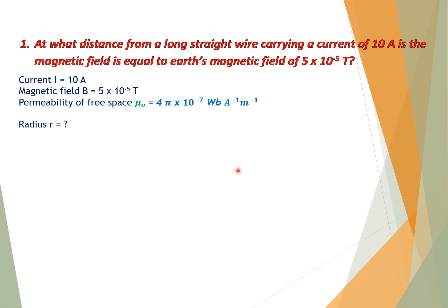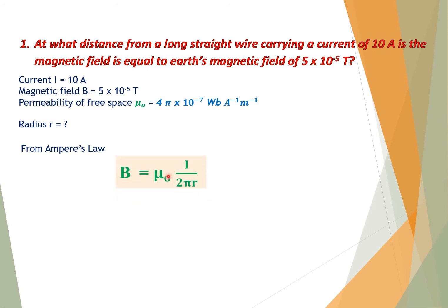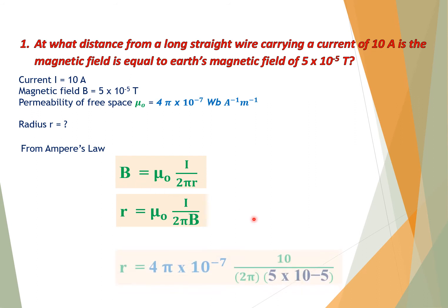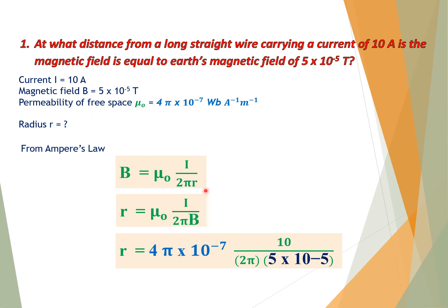We want to calculate the radius r (distance from the wire). From Ampere's law: B = μ₀I / (2πR). Solving for R: R = μ₀I / (2πB). Putting in all the values of μ₀, I, π, and B, and after calculation we get R = 0.04 meter. That is the distance from the long straight wire to the point where the magnetic field equals Earth's field.